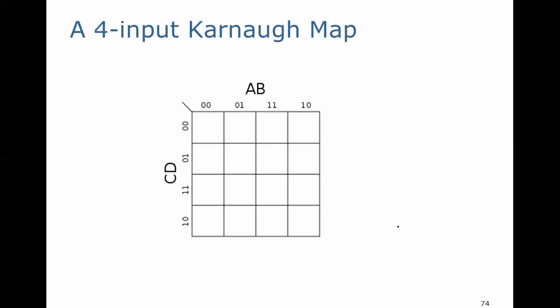Lastly, I just want to show that the Karnaugh map can be extended beyond three inputs. I've seen examples for six inputs, though I've never worked any beyond four. The four-input Karnaugh map is pretty easy — it just adds a lower half, and we now count gray code in the rows just as we counted gray code across the columns previously.